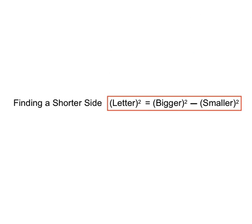So that's how we find a shorter side: we take the letter squared equals the bigger number squared minus the smaller number squared. Thanks for listening, see you next time.